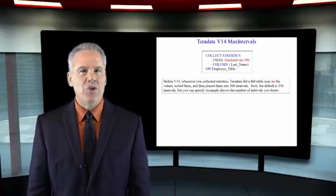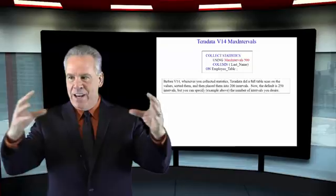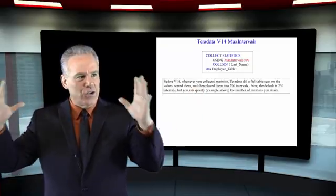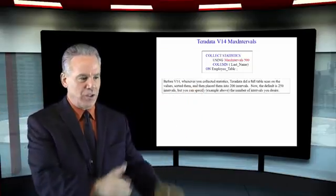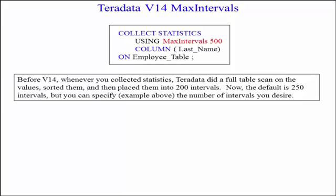In V14, when you collect statistics, it's going to go out and get all of those values, sort them, and then chop those into 250 intervals — and you've seen the histogram that it creates. Before V14, the default was chopping things into 200 intervals. Nowadays you can actually specify more or less intervals. Because we always list the most popular value in an interval, if it's real wide, we could get this even more finite.